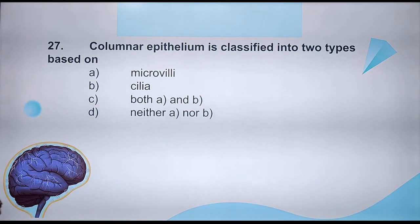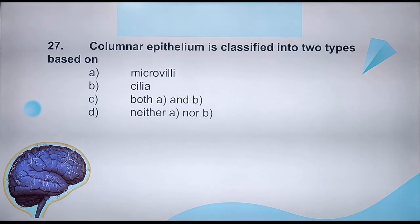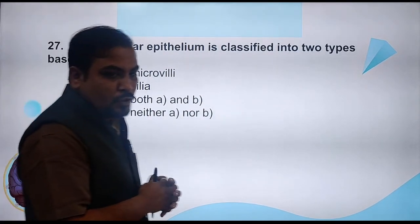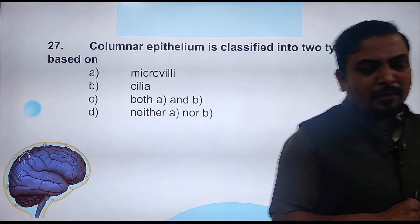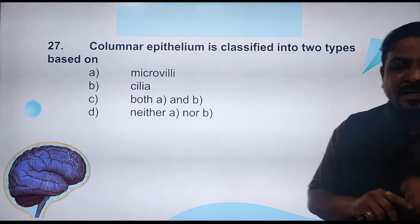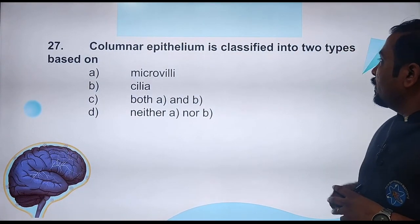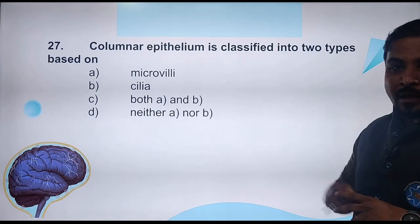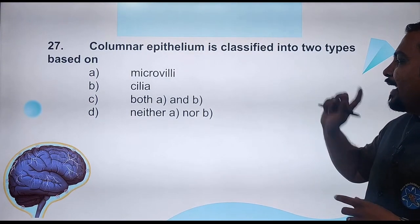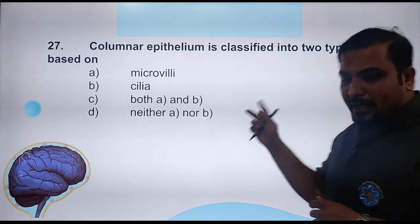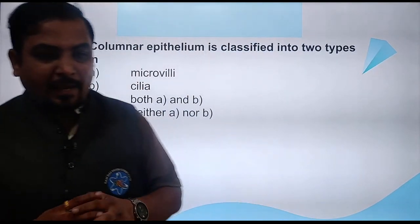The next question: Columnar epithelium is classified into two types based on — options are: microvilli, cilia, both A and B, or neither A nor B. What do you think? Reply quickly.